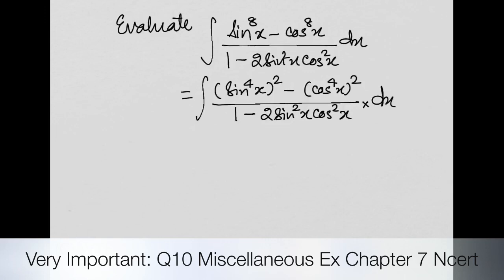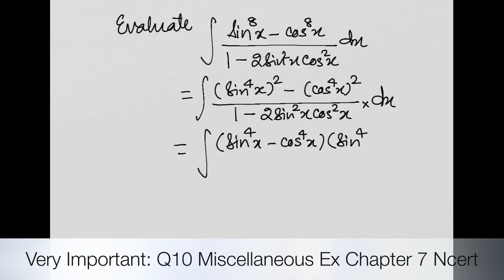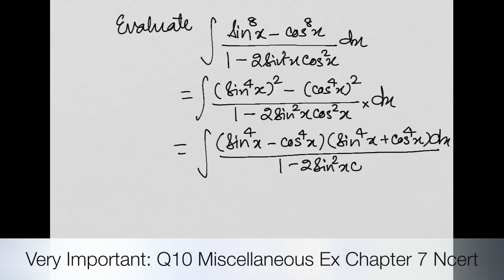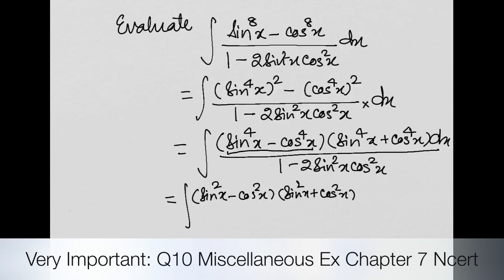ऐसा लिखते हैं और अब हम apply करेंगे a square minus b square. और अब आप देखें, इसमें फिर से chance बन रहा है कि आप a square minus b square लगाओ. तो आपके पास आ जाएगा — बाकी terms के साथ denominator.